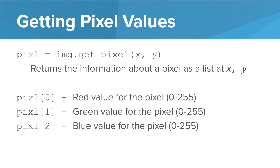Let's take a look at the commands to get our pixel values. We will start with our image loaded from earlier using the variable img. Recall that the image is made up of individual pixels, and each pixel has a red, green, and blue value. To get at this information, we need to first get a pixel using the getPixel command and passing it an x,y coordinate. That will return a list of values — the first value is the red value ranging from 0 to 255, the green is the second index value, and the blue is the third.